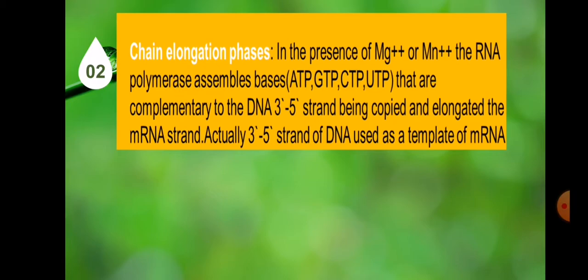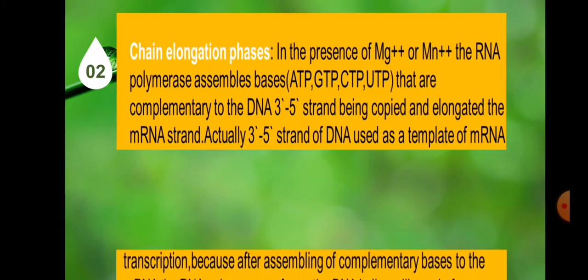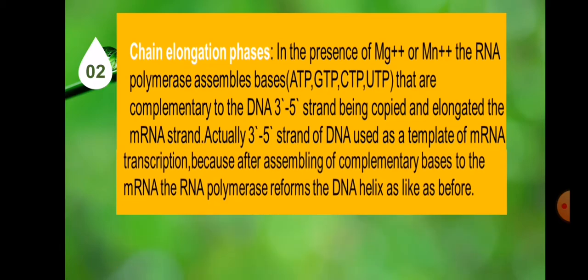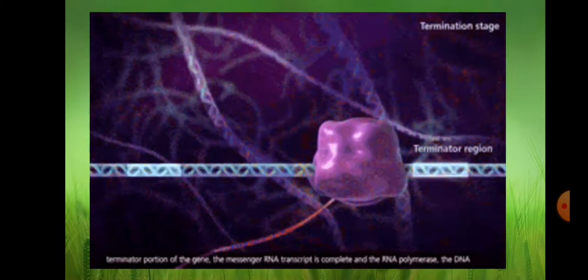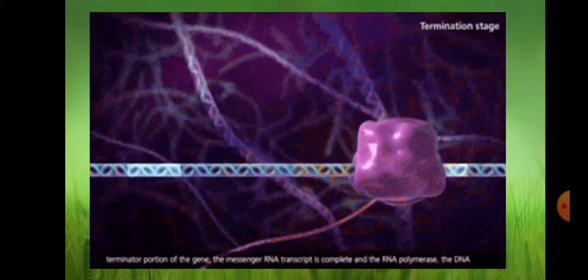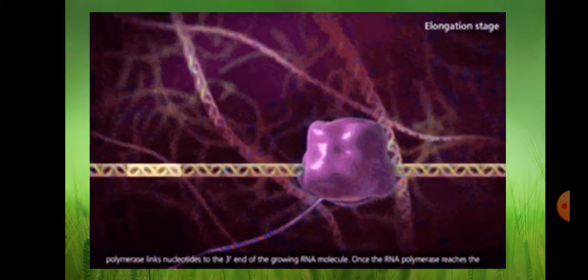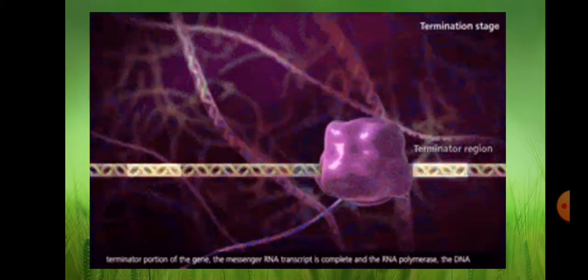Chain elongation phase. In the presence of magnesium or manganese ions, the RNA polymerase assembles bases — ATP, GTP, CTP, or UTP — that are complementary to the DNA 3' to 5' strand being copied, and elongates the mRNA strand. The 3' to 5' strand of DNA is used as a template for mRNA transcription, because after assembling of complementary bases to the mRNA, the RNA polymerase reforms the DNA helix as before. In this slide, you can see that RNA polymerase assembles bases in the presence of magnesium or manganese ions, with the template strand — the 3' to 5' strand — being copied and elongated into the mRNA strand.